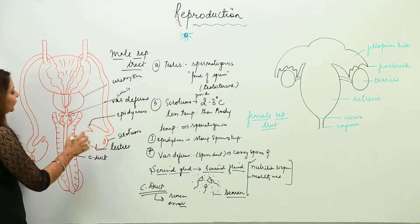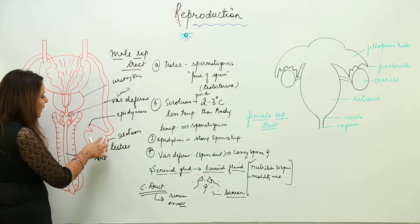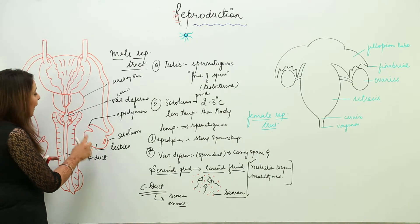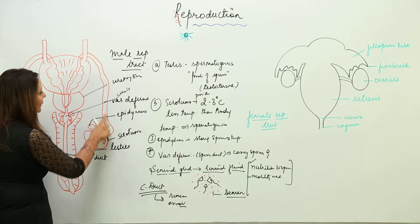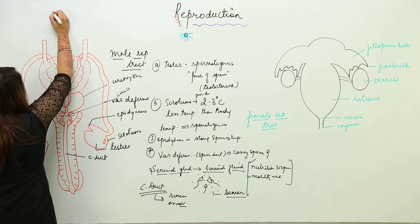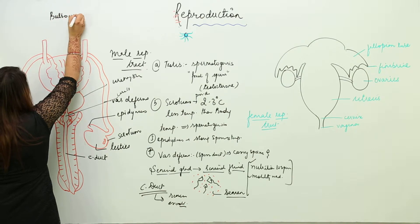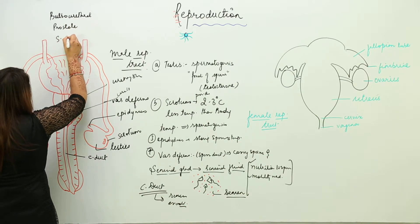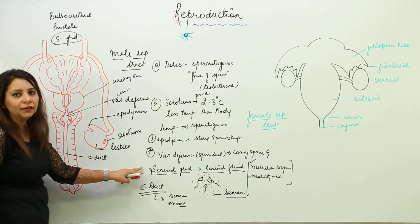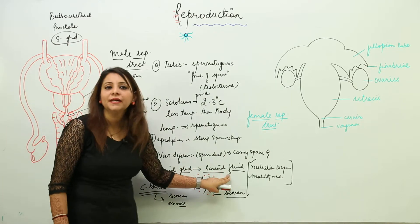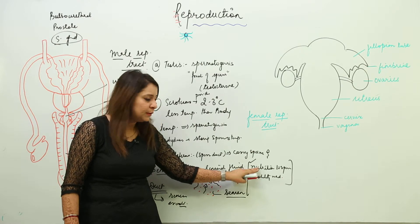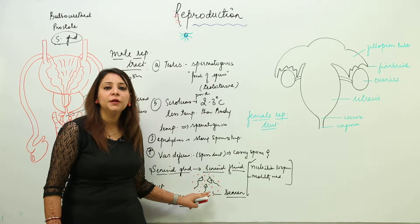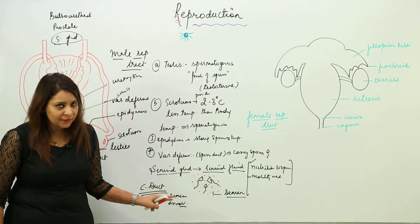To summarize the male reproductive tract: the testes carry out spermatogenesis and are located in the scrotum, which provides 2 to 3 degrees Celsius less temperature than body temperature. Sperms are stored in the epididymis. The vas deferens carries sperms. The glands — bulbourethral gland, prostate gland, and seminal gland — secrete seminal fluid, which provides nutrition and a motility medium for the sperms. Once glandular secretions mix with sperm, the mixture is called semen.